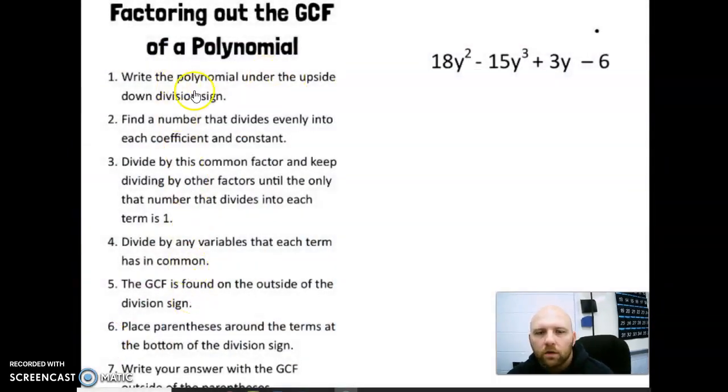We're going to write the polynomial under the upside-down division sign. We typically work down the page. We want to find a number that divides evenly into each coefficient and each constant. So 18, 15, and 3 are the coefficients, and 6 is the constant. What number can we divide evenly into those?